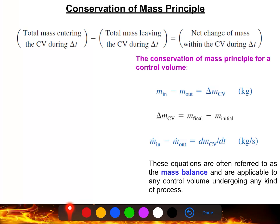The conservation of mass principle applies to control volumes, where mass interactions occur. For a control volume, the total mass entering during time delta t minus the mass leaving equals the net change of mass in the control volume. We define this as: mass in minus mass out equals delta m_cv.